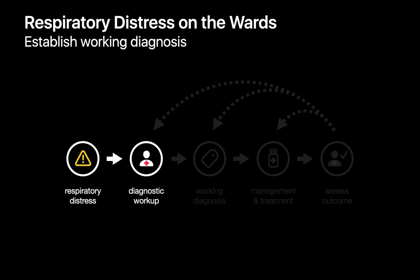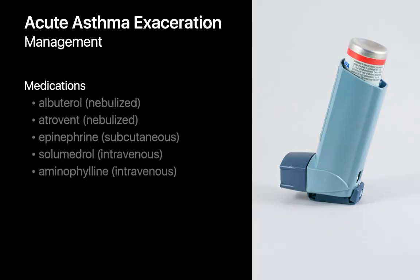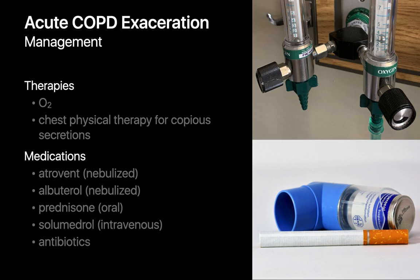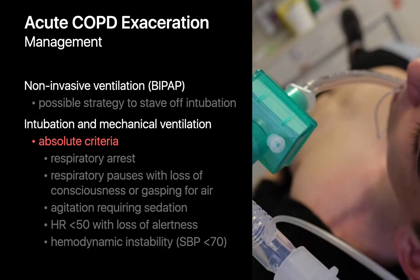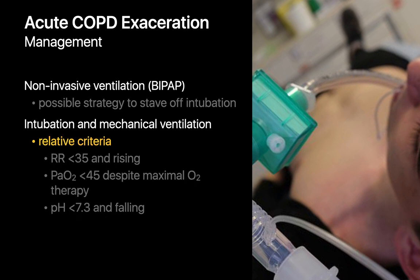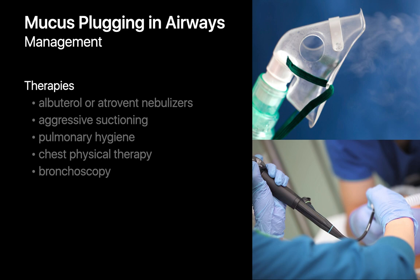Once the portable chest x-ray and other first-line studies are back, a working diagnosis can often be established. Management of suspected bronchospasm in acute asthma exacerbation may involve nebulizers, sub-q epinephrine, IV solumedrol, or aminophylline. Management of bronchospasm in COPD might involve oxygen, chest PT to clear airway secretions, nebulizers, steroids, or sometimes antibiotics. Aggressive interventions might include BiPAP or mechanical ventilation. Options for central mucus plugging range from nebulizer treatments, suctioning, pulmonary toilet, and chest PT to bronchoscopy.